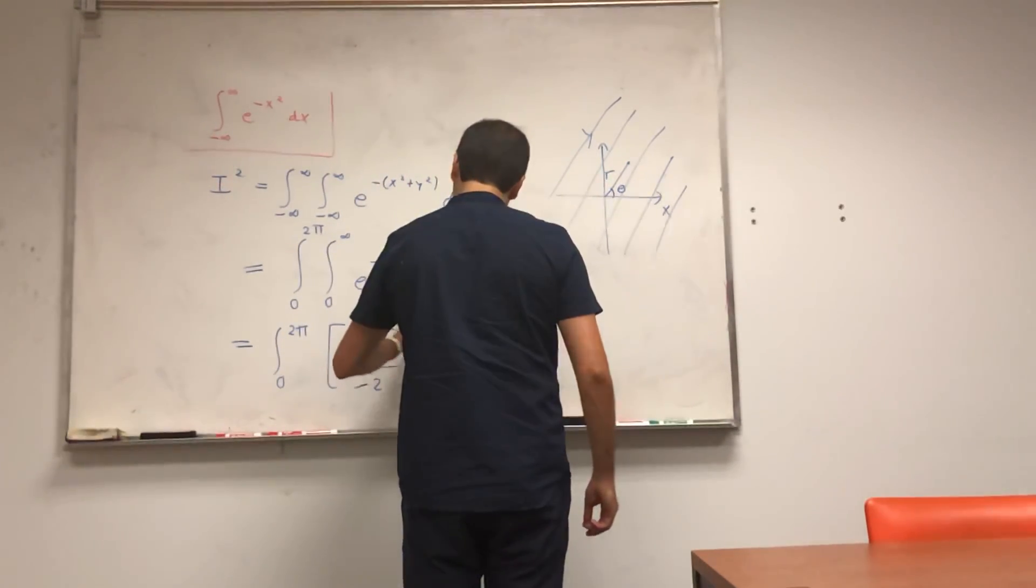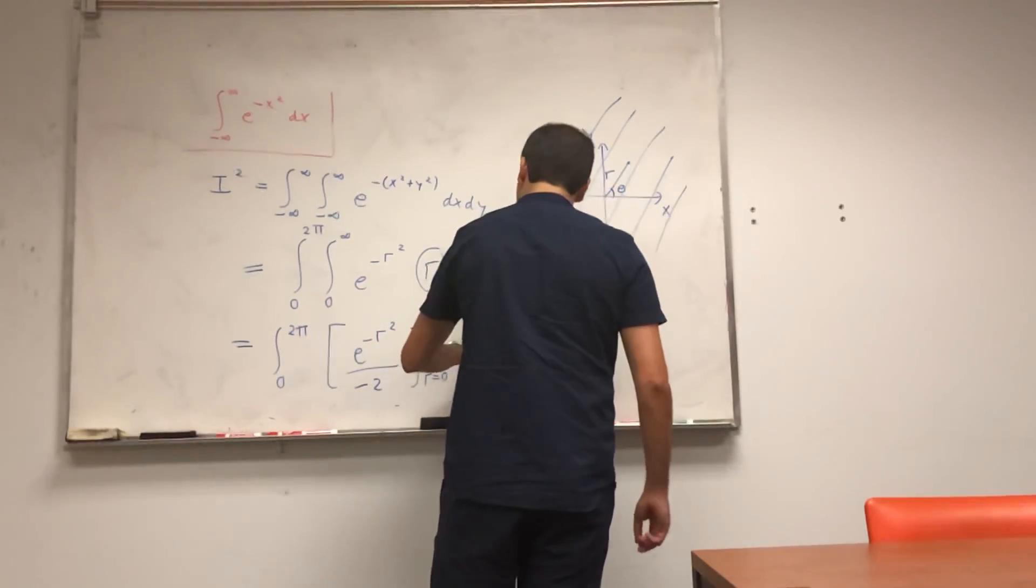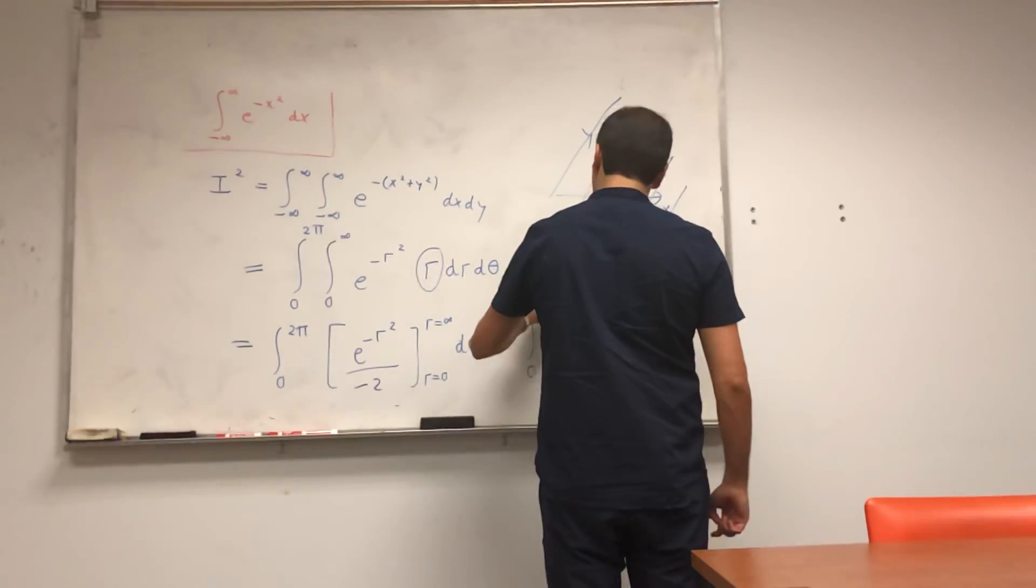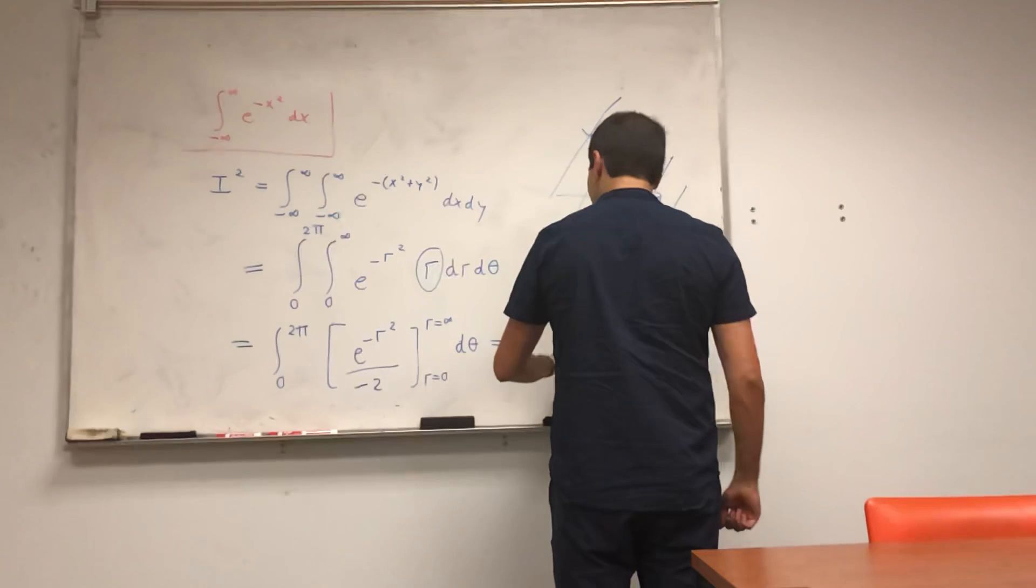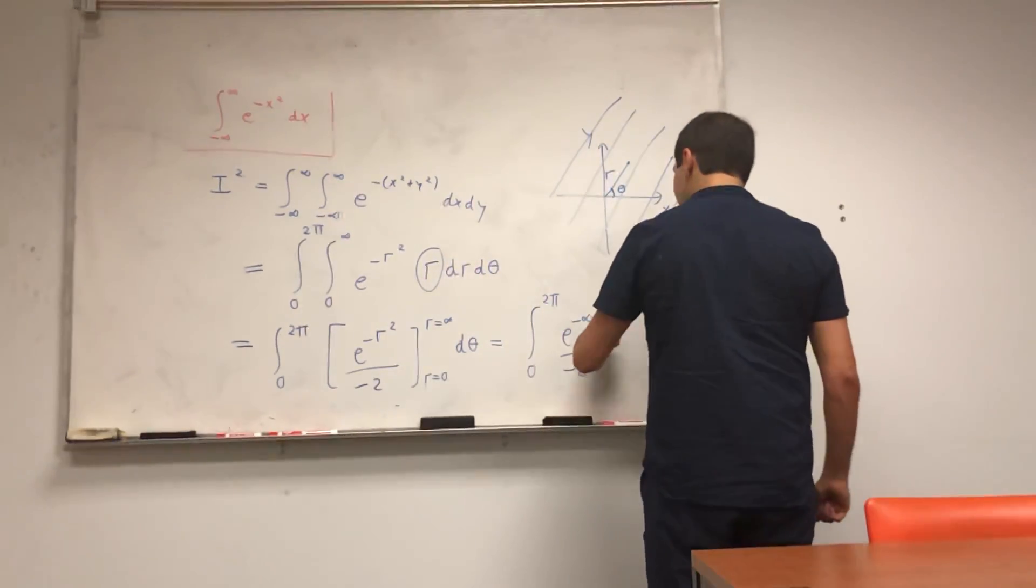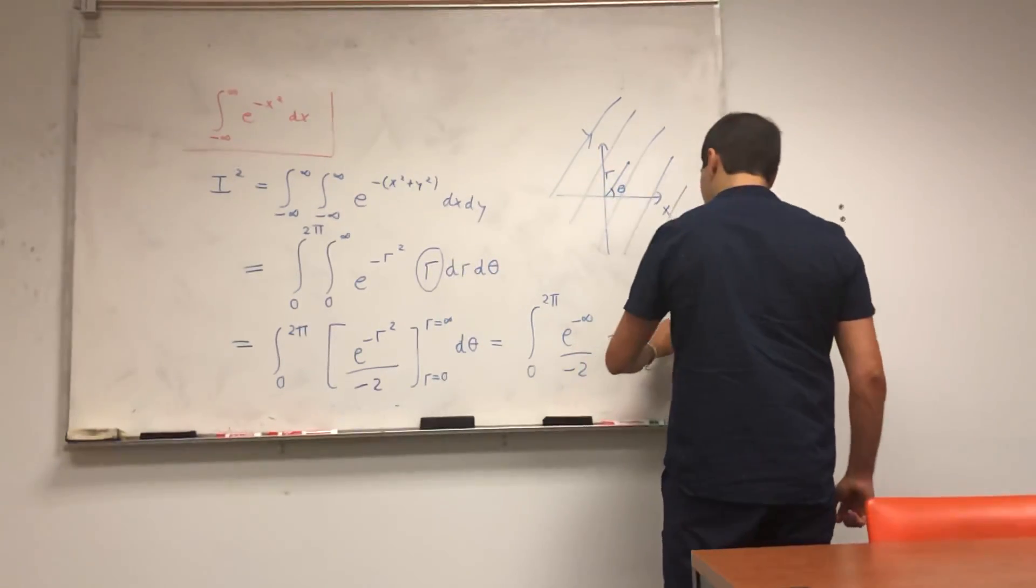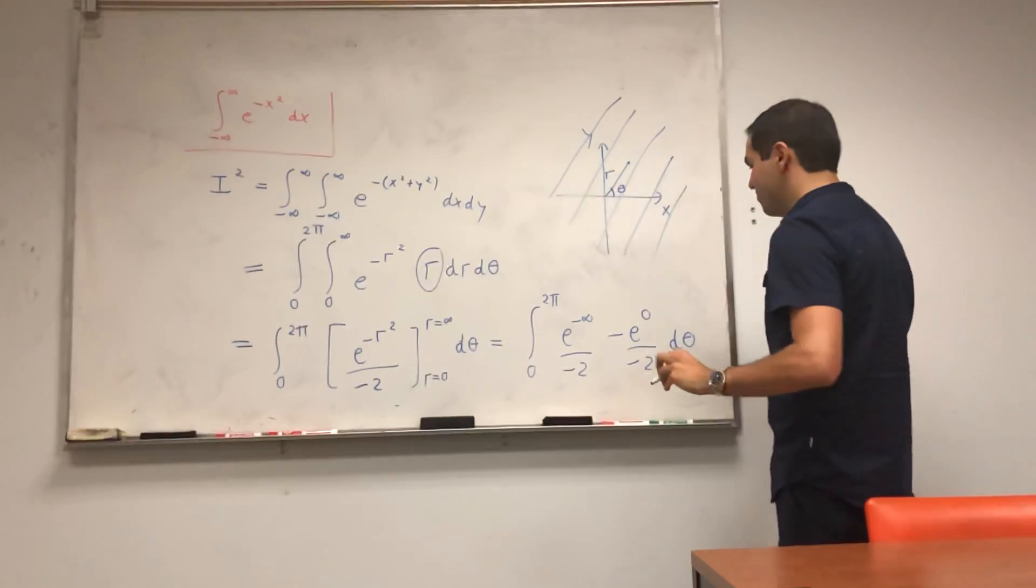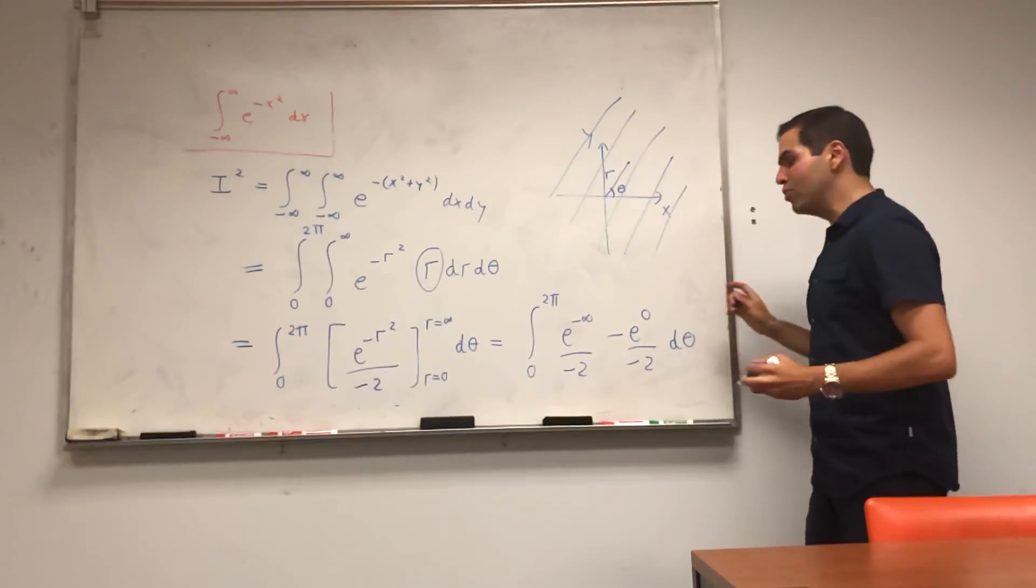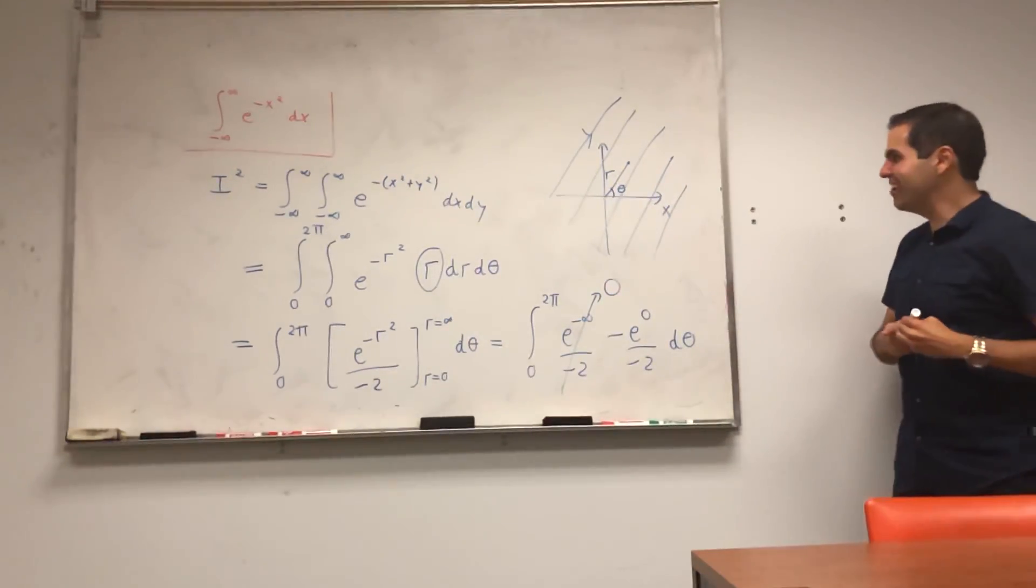And that's from r=0 to r=∞ dθ. And you're left with the integral from 0 to 2π: e^(-∞)/(-2) minus e^0/(-2) dθ. Now e^(-∞), well, it just goes to zero, so this whole thing goes to zero.